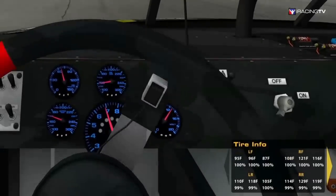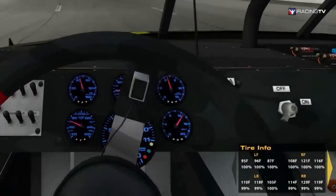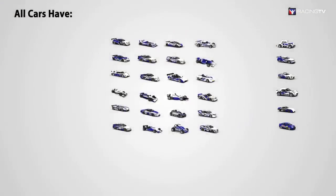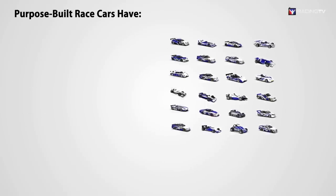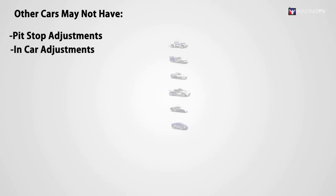Now we can easily click through all of the Black Boxes and settings. All cars have a lap timing box, standings, relative, fuel, tires, tire info, and graphics boxes. Many of the purpose-built race cars also have pit stop adjustments and in-car adjustments. Some other cars may not have pit or in-car adjustments.